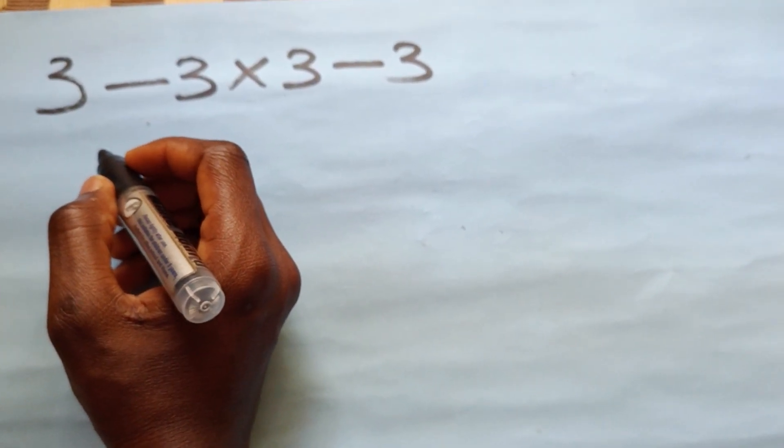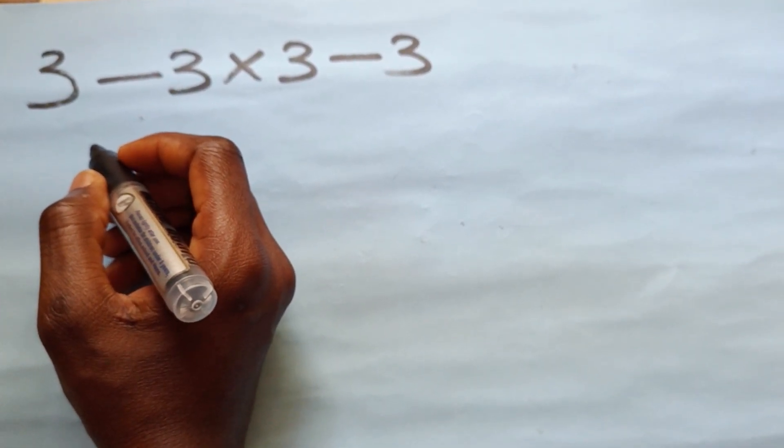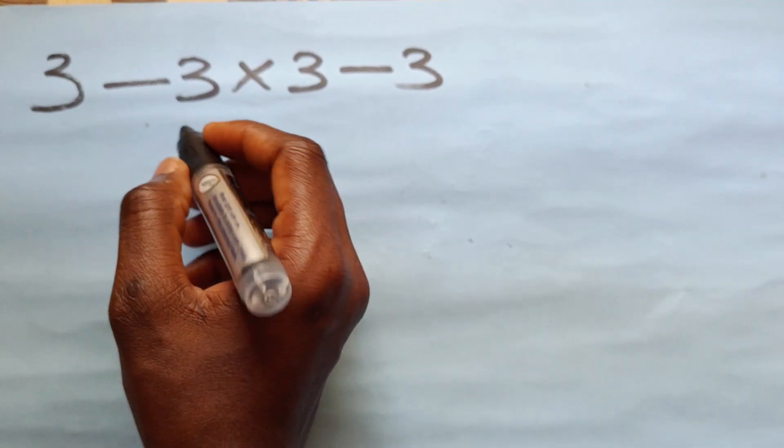Let us solve this question together. We have 3 minus 3 multiplied by 3 minus 3.